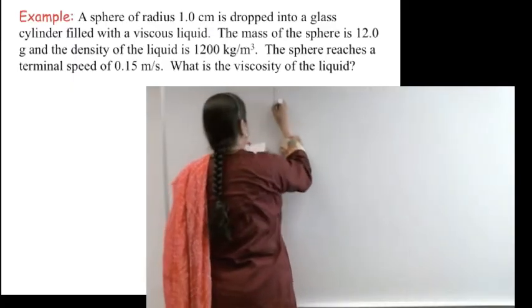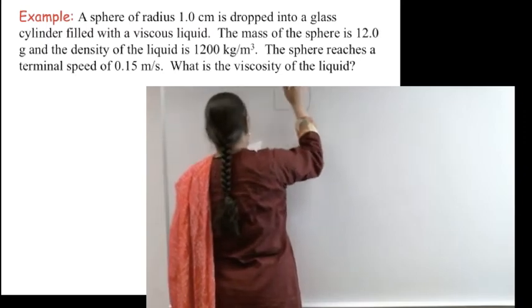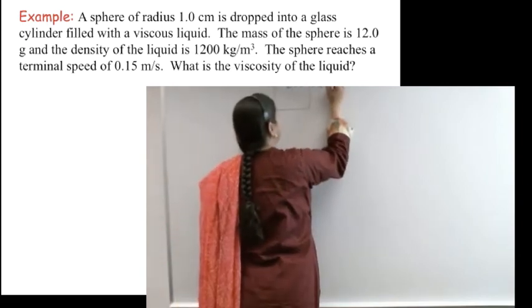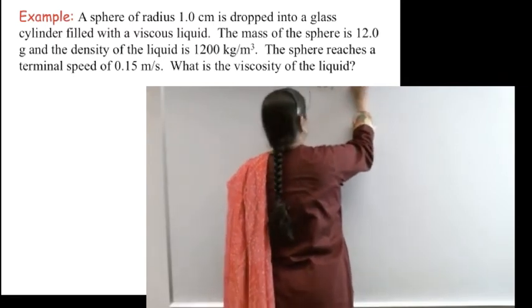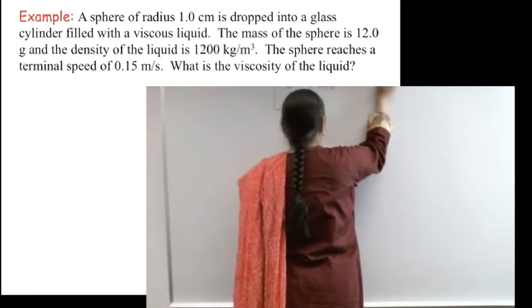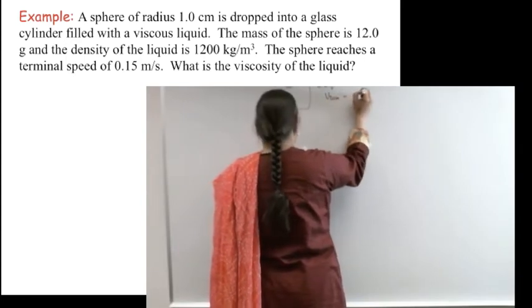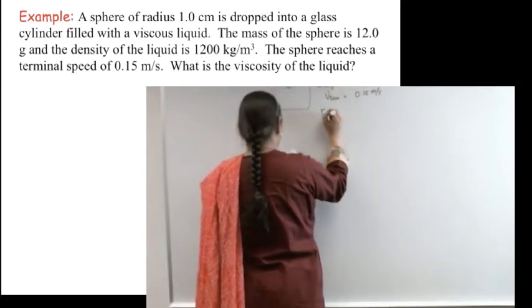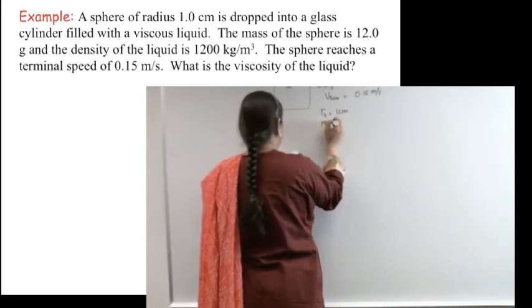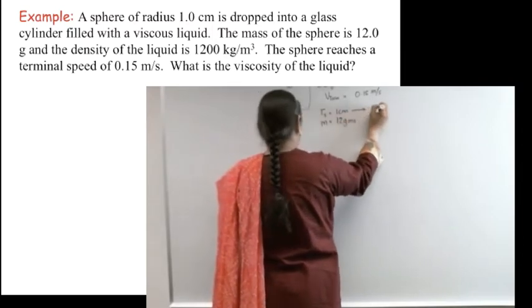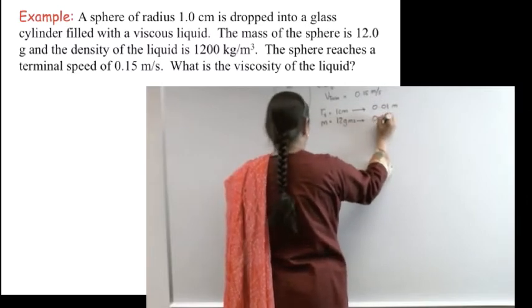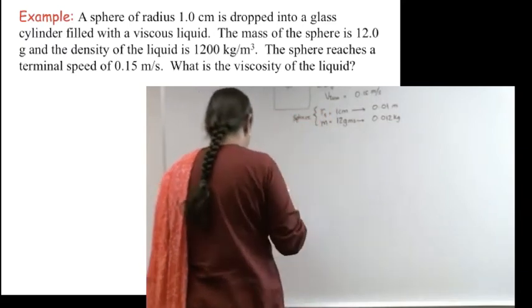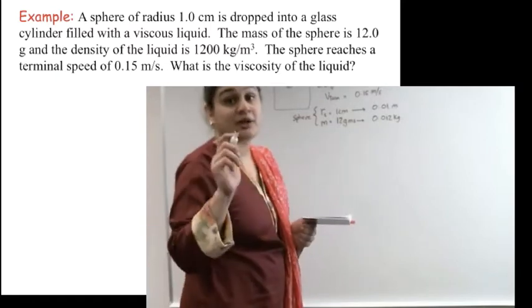The question says I have a sphere of radius dropped in a glass cylinder. The ρ of the liquid is 1200 kilograms per meter cubed. It has a terminal velocity of 0.15 meters per second. The radius of the sphere is 1 centimeter, and its mass is 12 grams. When I convert, this is going to be 0.01 meters, and this is going to be 0.012 kilograms of the sphere. What it's asking me is, what is the viscosity of the liquid? So η is what I'm looking for.